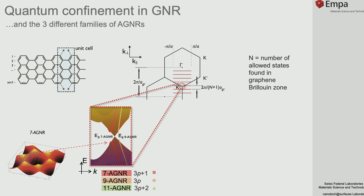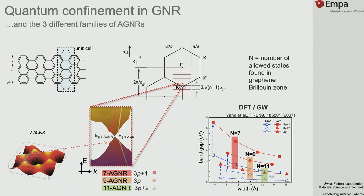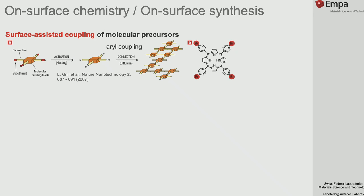For armchair ribbons, their electronic properties can be derived from graphene. Depending on the width—the number of rows of carbon atoms in the ribbon—the band structure will get closer to or even hit the Dirac cone of graphene. Increasing the width, the band gap decreases, with a superimposed oscillation due to different families of nanoribbons. Since these stripes are just nanometers wide, it is crucial to avoid defects. So, is it possible to create atomically precise graphene nanoribbons?